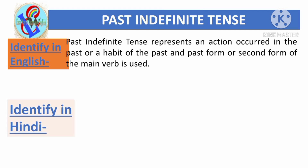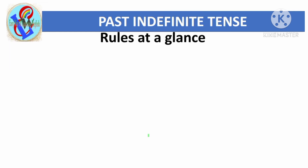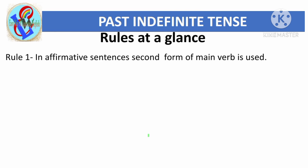How do we know in Hindi? When we have a sentence in Hindi, in the sentence of past indefinite tense, the second form of the main verb is used. When we are in a past indefinite tense, we use the second form or past form of the main verb.